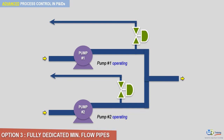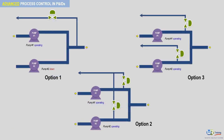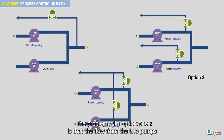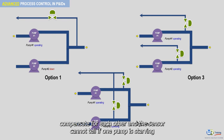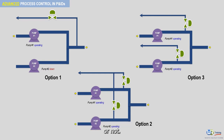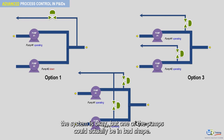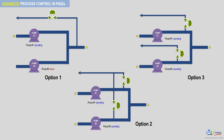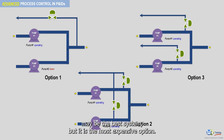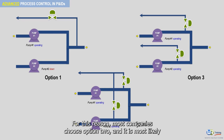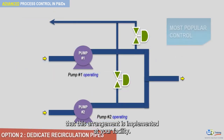The problem with option 1 is that the flow from the two pumps compensates for each other, and the sensor cannot tell if one pump is starving or not. The sensor could be telling you that the system is okay, but one of the pumps could actually be in bad shape. Option 3 may be the best system, but it is the most expensive option. For this reason, most companies choose option 2, and it is most likely that this arrangement is implemented at your facility.